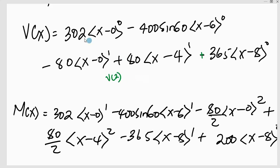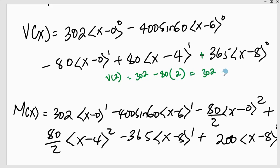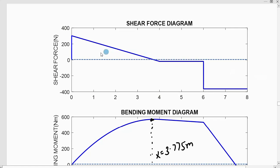V(2) gives: 302 times 1, then the ⟨2 − 6⟩⁰ term becomes 0 since 2 < 6, the ⟨2 − 4⟩¹ term also becomes 0 since 2 < 4, and then minus 80 times 2 gives minus 160. So V(2) equals 302 minus 160, which is approximately 142 newtons. Looking at the shear force diagram at X equal to 2, I get a value equivalent to around 142 N, which I can verify on the diagram.